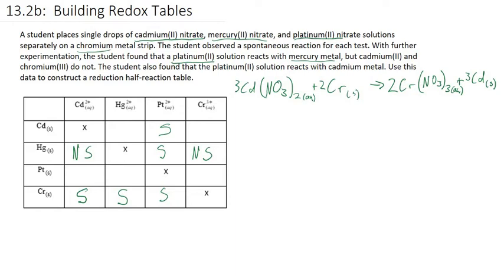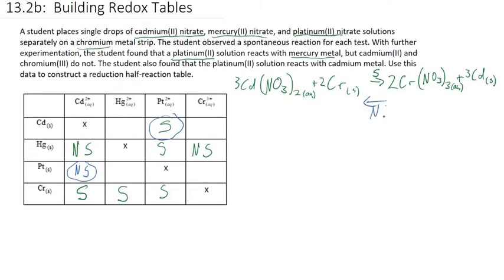We've exhausted what the student actually did in this experiment, but we still haven't filled out our table completely. We can find the rest of the data just by thinking about it. Let's look at platinum with cadmium ions — we have a similar reaction where we react platinum ions with cadmium solid. It's the same two metals, just switched. If the platinum ion reacted spontaneously with cadmium metal, then it's not going to be spontaneous to go the other way around because that's just the same reaction in the opposite order. So this one is non-spontaneous. If cadmium ions reacting with chromium metal is spontaneous, then chromium ions reacting with cadmium metal is going to be non-spontaneous. It can only be spontaneous in one direction or the other.